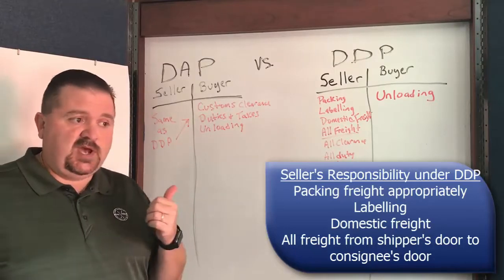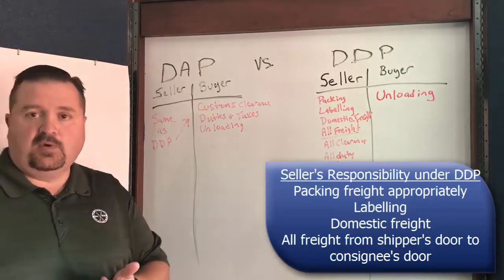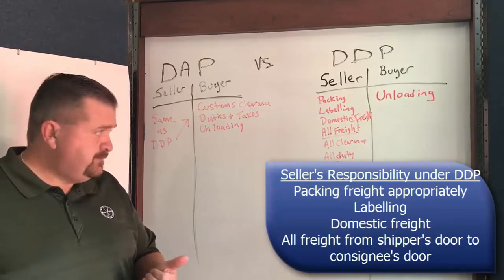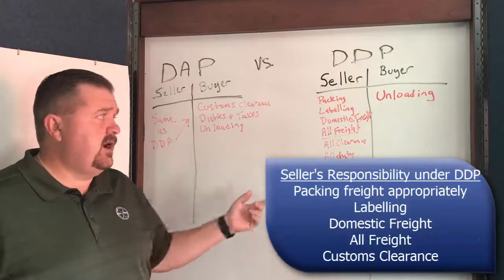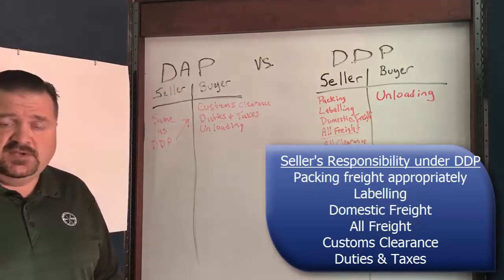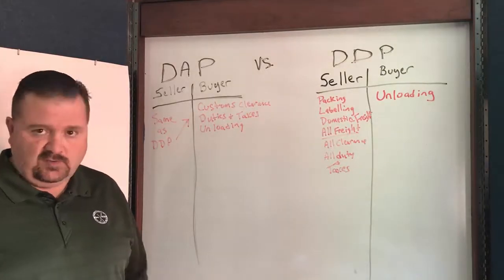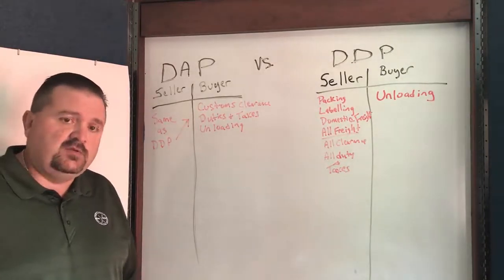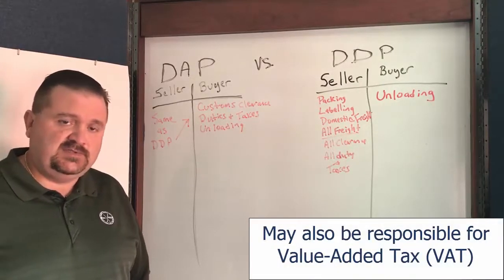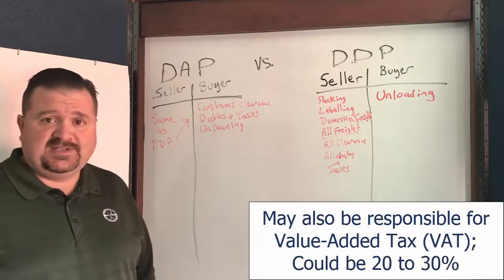So if it's moving by air, the seller needs to get it from their dock to the airport, and from the airport — in the United States for example — to the consignee's door. They have to pay all of that, all the clearance charges, and all duties and taxes. Shifting gears a little: if you're doing an export from the United States to anywhere in the EU, you would not only have to pay local taxes and duties but you might also be responsible for VAT tax — value-added tax — which is somewhere between 20 and 30 percent depending on the country.